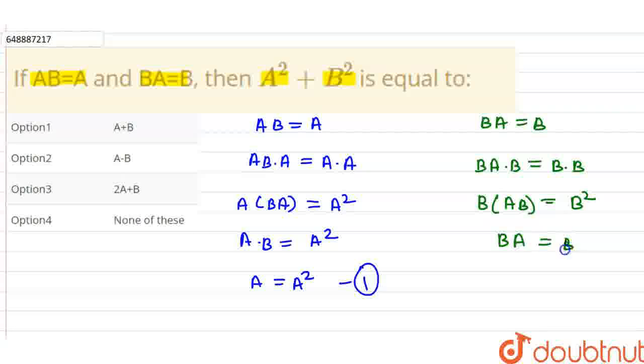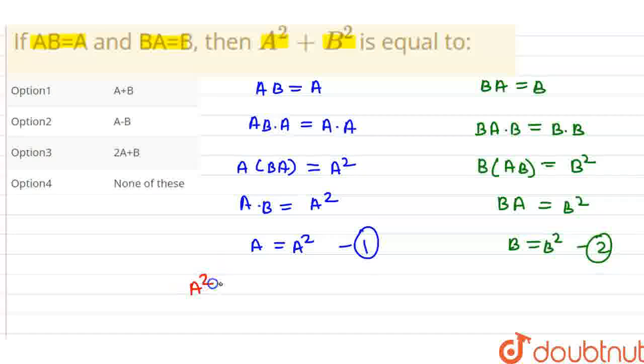Now AB equals to A. So BAB equals to B squared. And BA equals to B. So B equals to B squared. This is the second equation. We need to find the value of A squared plus B squared.